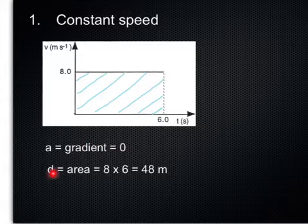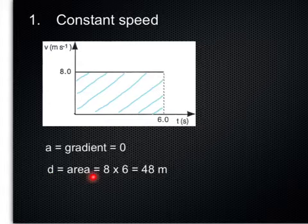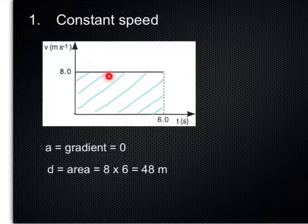To work out distance, you work out area. Area is simply this shaded area under the graph, which is in the shape of a rectangle. So it's 8 times 6, giving you 48 meters.